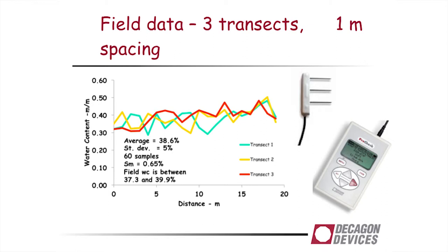We had 60 samples there. The average water content computed was 38.6%. The standard deviation was not 3% but 5%. So the situation is even worse than we imagined with these calculations. With a standard deviation of 5%, if we want to know the water content within 1%, we would need a hundred samples to do that. Even with our 60 samples, the standard deviation of the mean is 0.65%, so the field water content is somewhere between 37.3% and 39.9%.